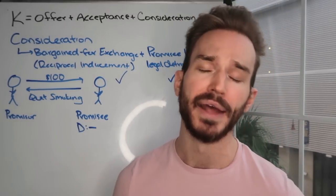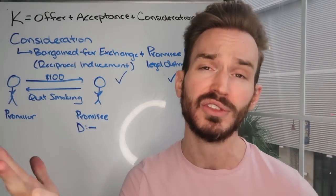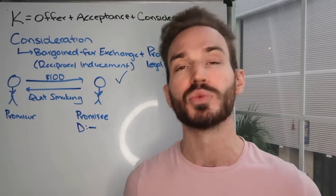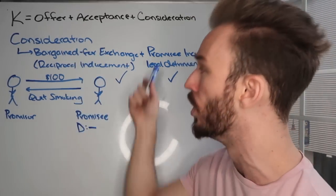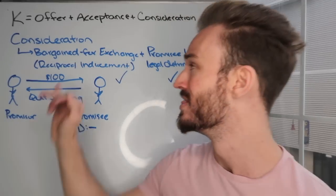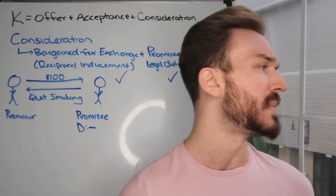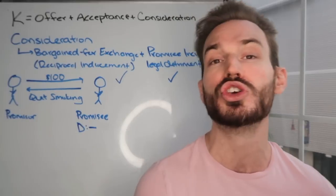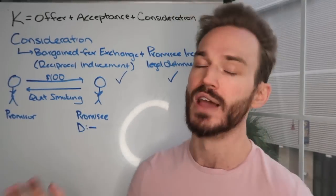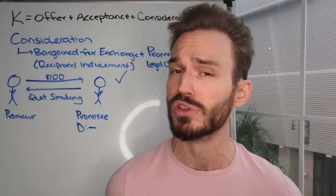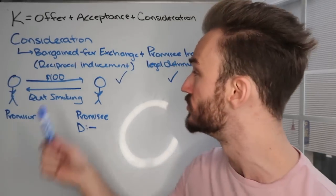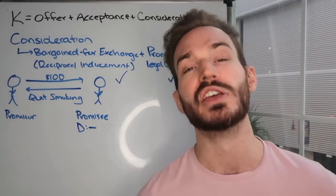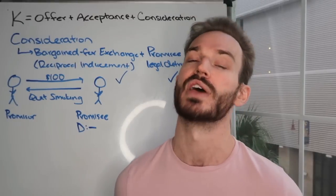That covers everything for consideration. We talked about past consideration, illusory promises, pretenses of consideration, gift promises, conditional gifts, and promising not to sue — those six things are the top ways I see consideration tested. In our next video, we'll talk about issues that come up with modification and the pre-existing duty rule. On your actual analysis, if you stick to these two elements — was there a bargain for exchange with reciprocal inducement, and did the promisee incur a legal detriment — in the majority of courts, that's going to be enough for consideration.